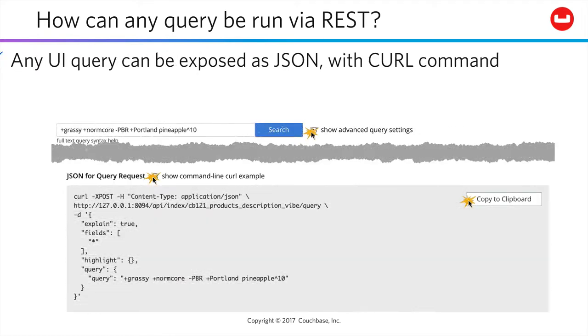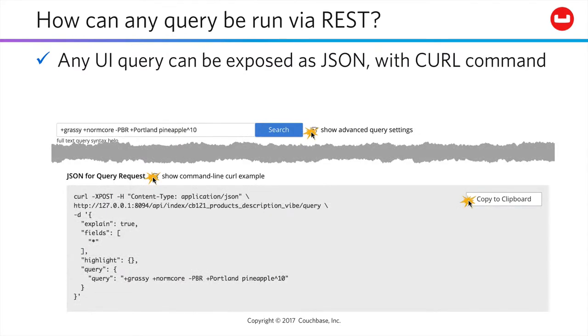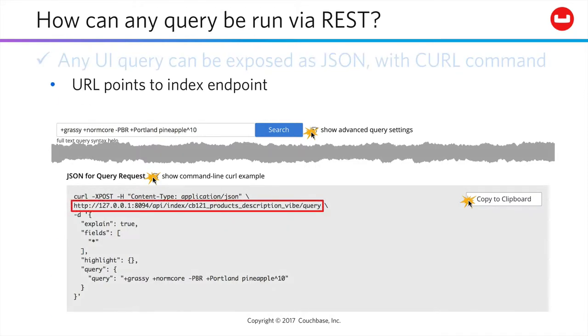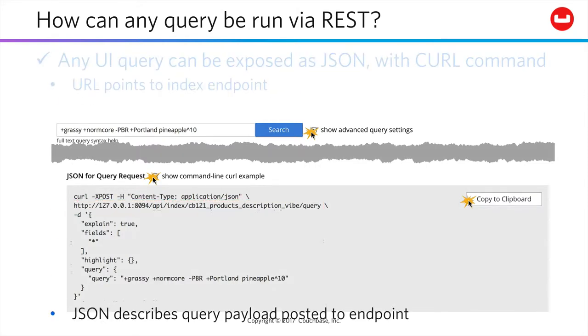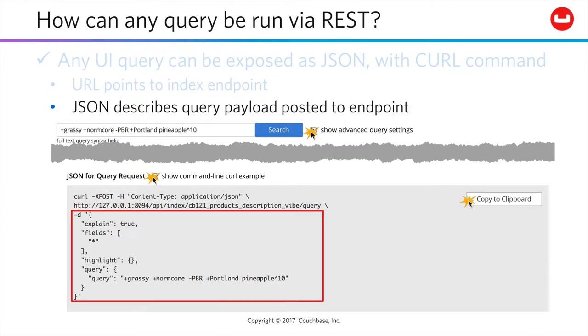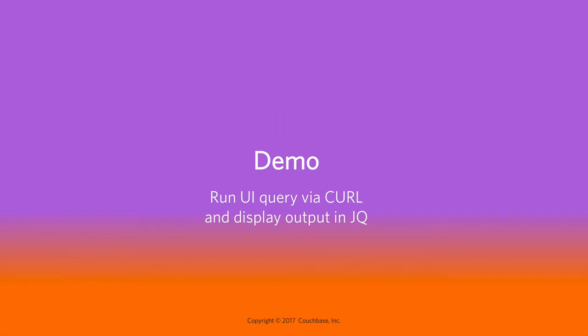Any query in the UI can be exposed as JSON with a corresponding curl command. The URL that's shown points to the required REST API endpoint, and the JSON describes the query payload to be posted to that endpoint. You can click Copy to Clipboard if you'd like to use this command in a terminal window. Let's take a look at running a query from the command line. We're also going to pipe the results to a command line tool called JQ to make them easier to read.